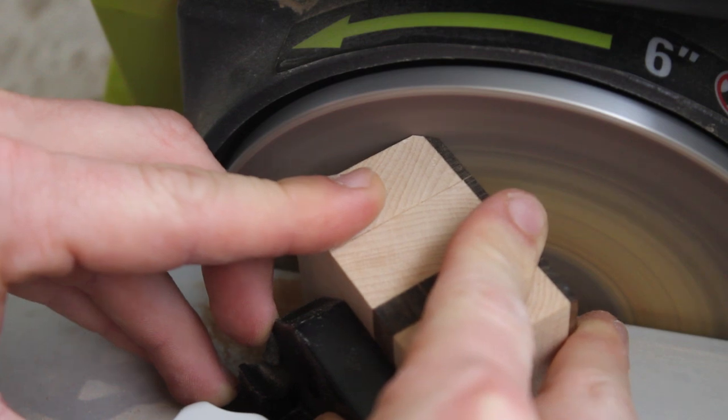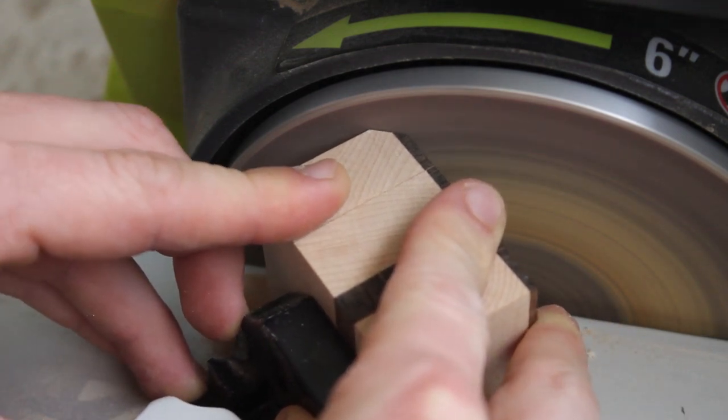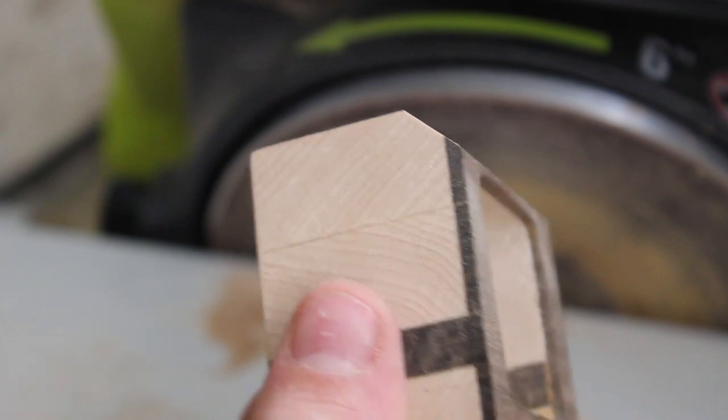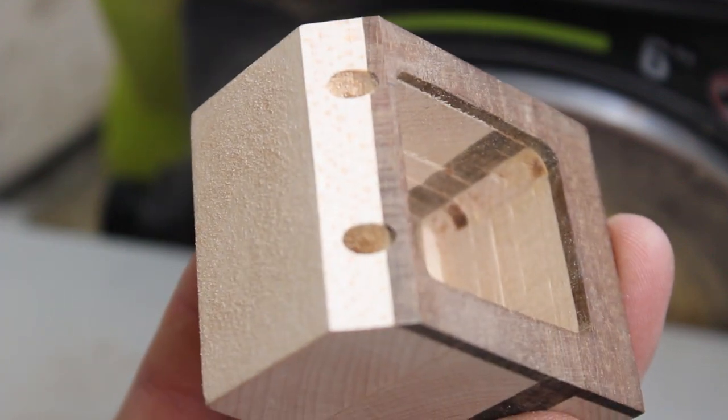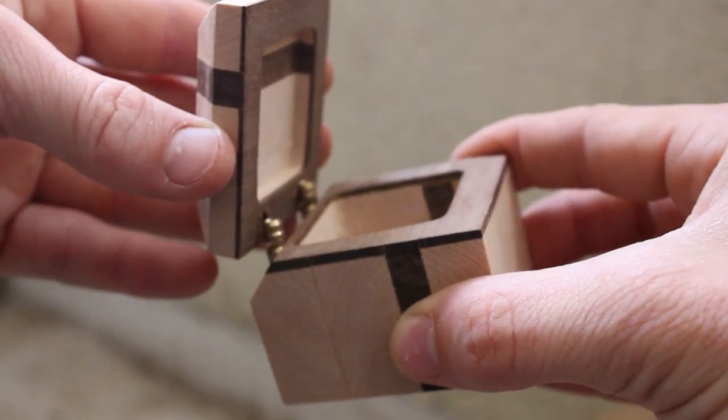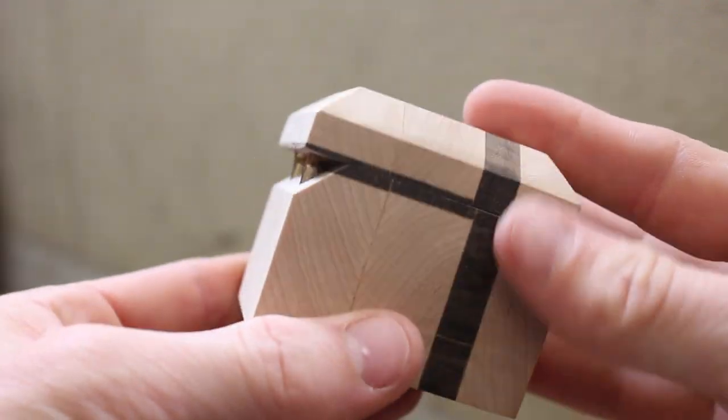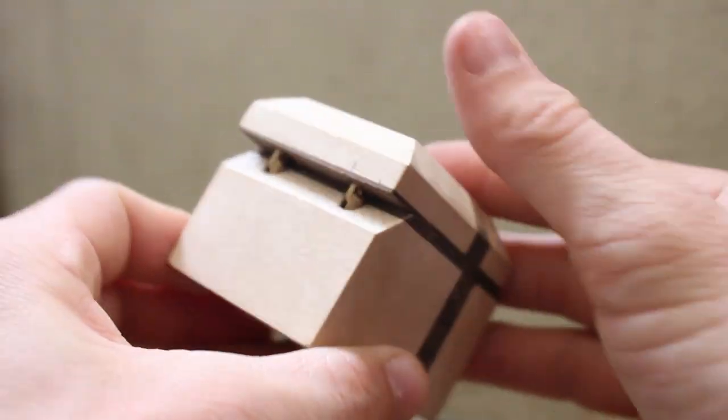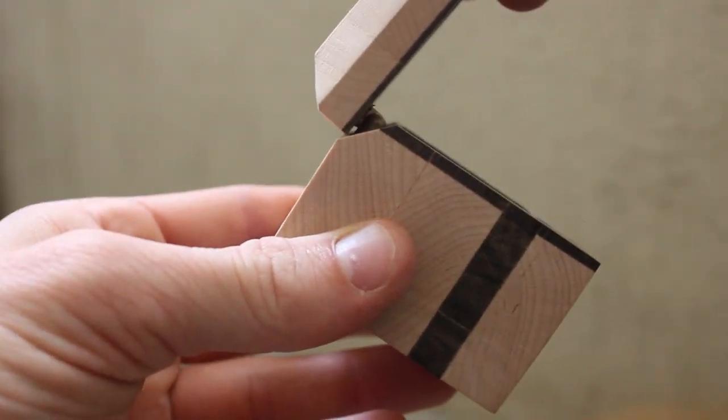After that, I needed to chamfer a 45 degree angle on the back end of the top of my bottom piece. And this is going to be necessary to allow these tiny hinges to flex. Just like this.